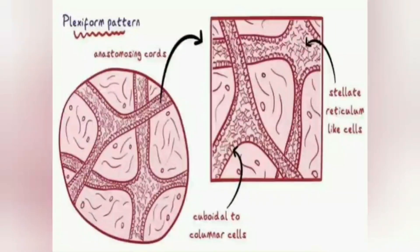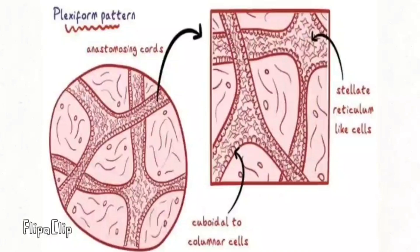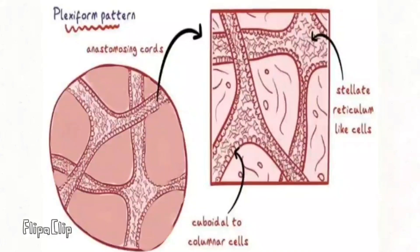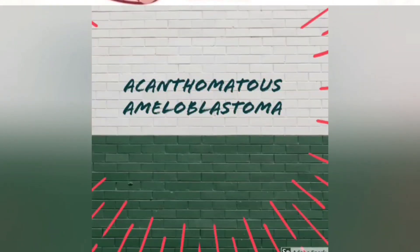As you can see in the figure, the peripheral layer is bound by columnar or cuboidal cells and the central cells are stellate reticulum-like cells. There is also cystic degeneration here, but in contrast to the follicular type — where cystic degeneration occurs in the central cells — in plexiform type, the cystic degeneration is undergone by the stromal cells.